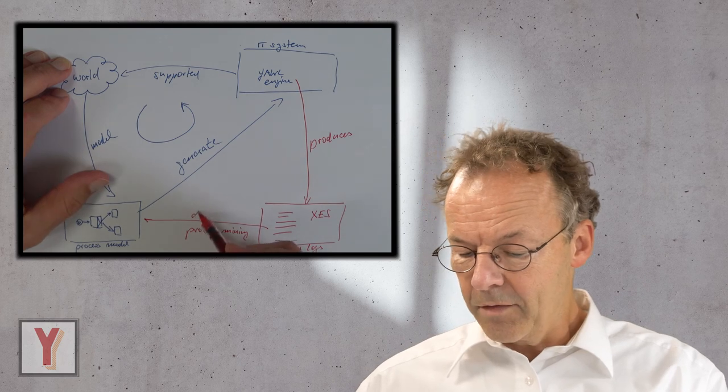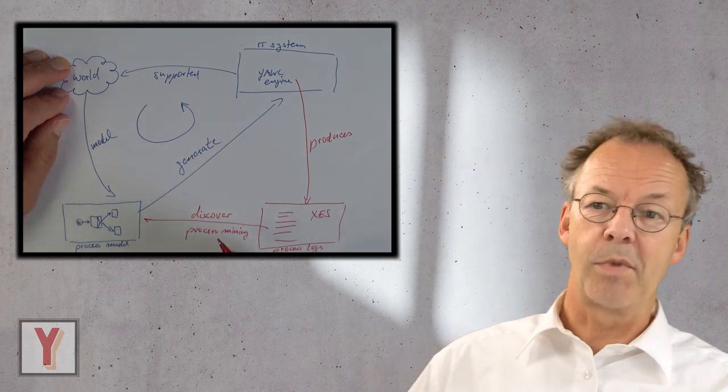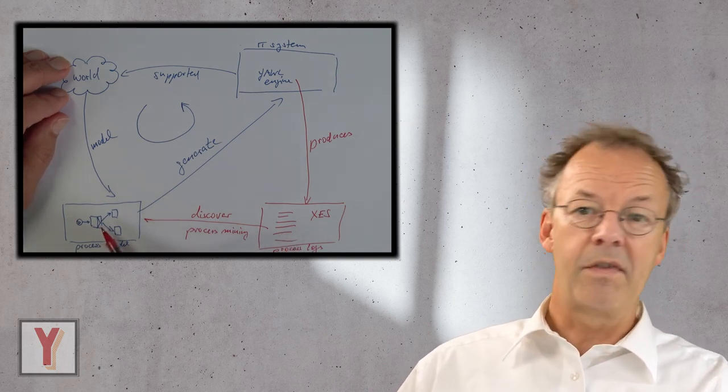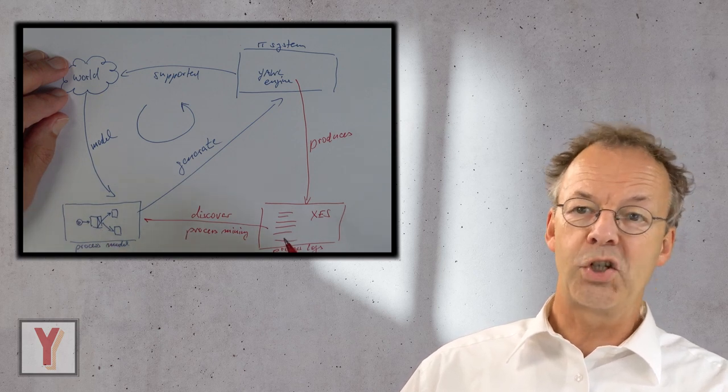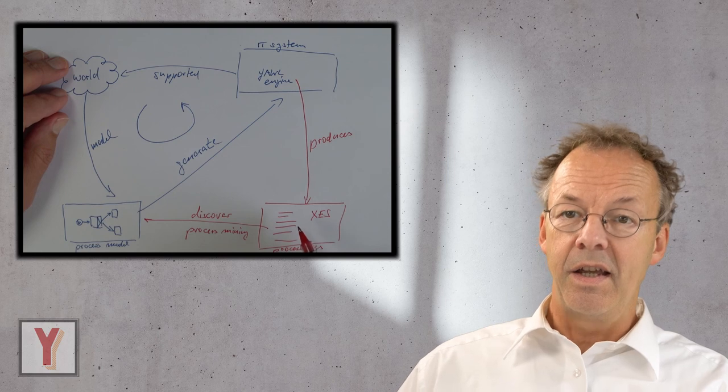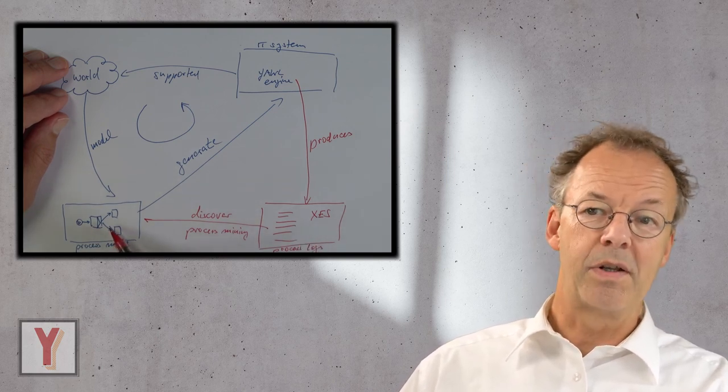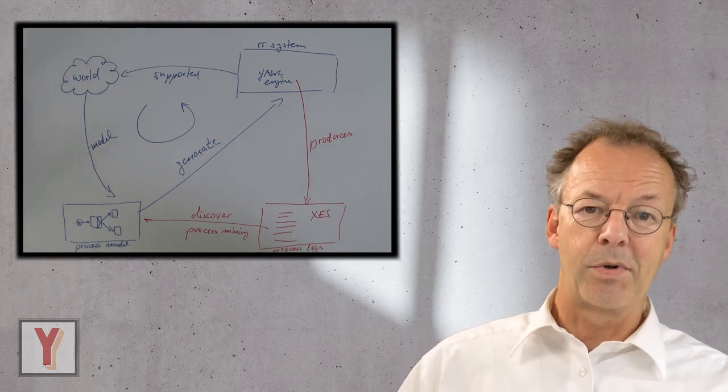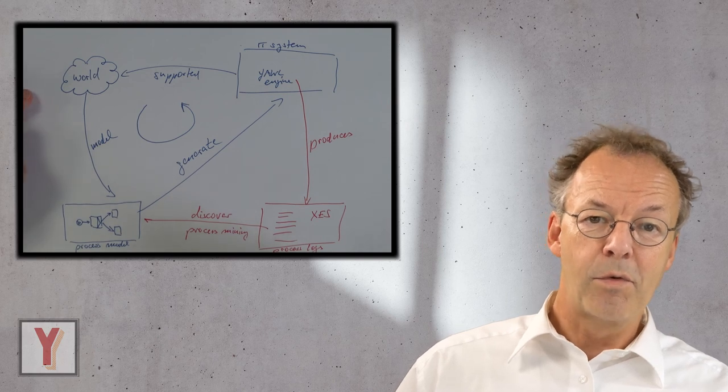And we can, for example, discover process models just by looking at the logs without looking at the original specification. Or we can do conformance checking, looking at if the logs conform to our process model. We can detect key performance indicators for our processes like average execution time or throughput, etc.